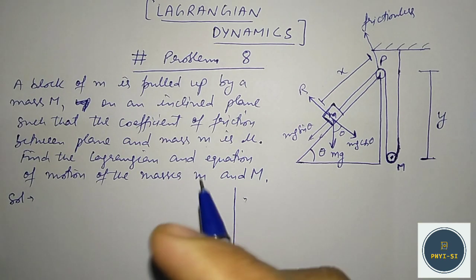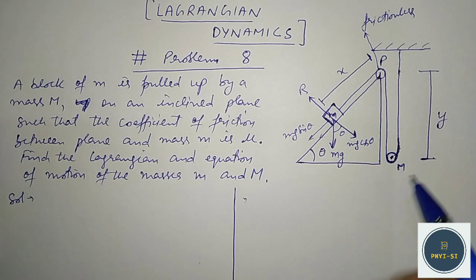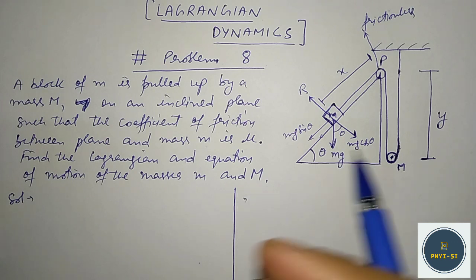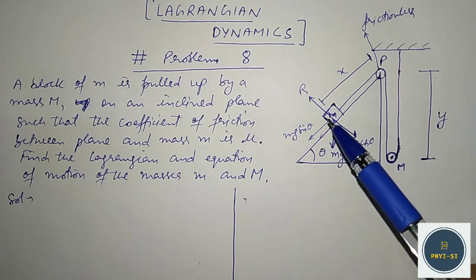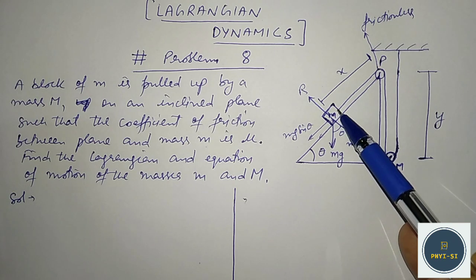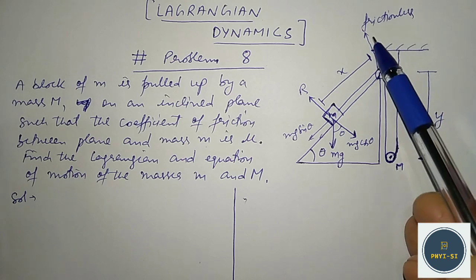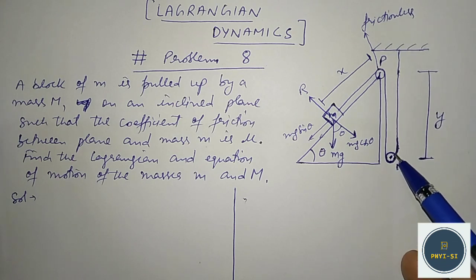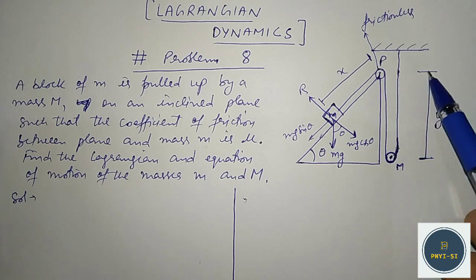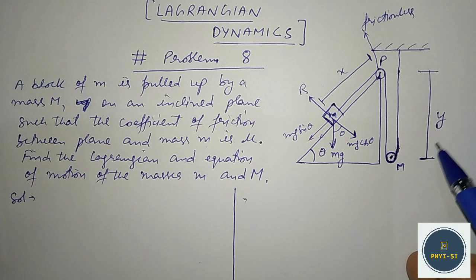What we have to do is find the Lagrangian and the equation of motion for this mass system — the small mass and the heavier mass. We need generalized coordinates to solve this problem. Let's say we have two generalized coordinates: x is the distance of the small mass m from the pulley, and y is the distance of the mass from the movable pulley.